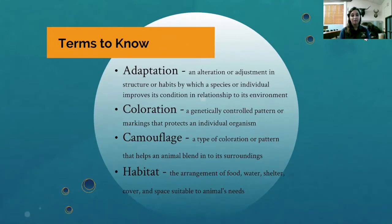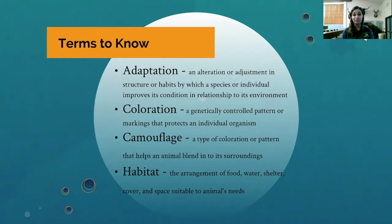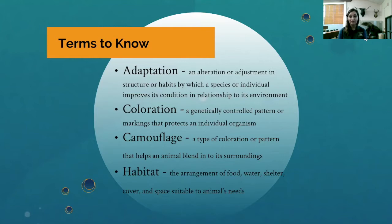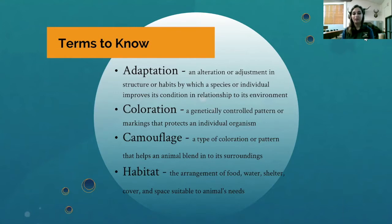Here are some terms to know. The first term is adaptation — an alteration or adjustment in structure or habits by which a species or individual improves its condition in relationship to its environment. Second, we have coloration, which is a genetically controlled pattern or markings that protect an individual organism. Third, we have camouflage, which is a type of coloration or pattern that helps an animal blend into its surroundings. And lastly, habitat is the arrangement of food, water, shelter, cover, and space suitable to an animal's needs.